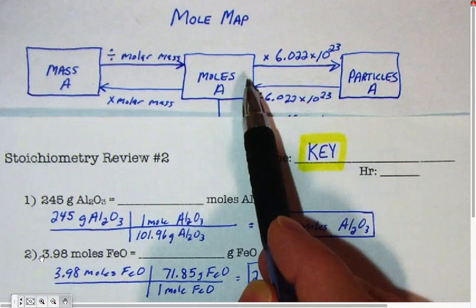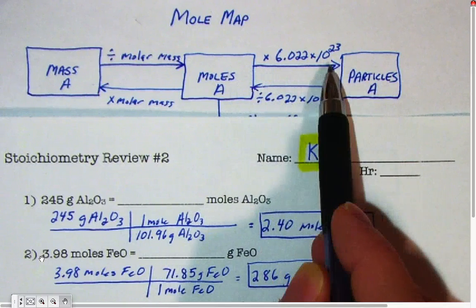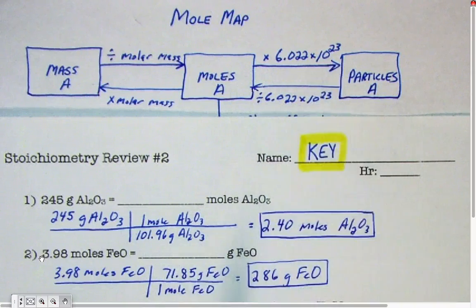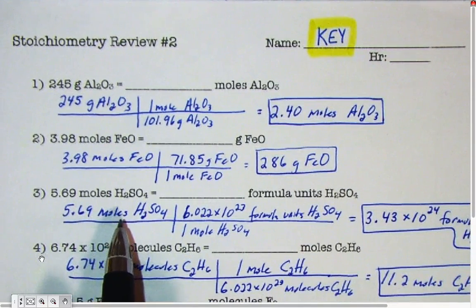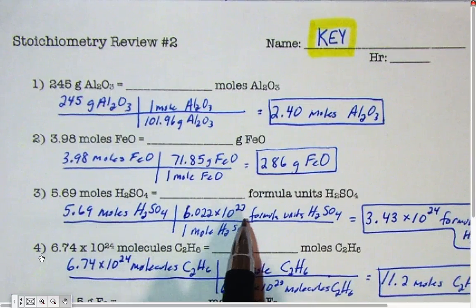This also works for particles. If you want to go from moles to particles, you multiply by Avogadro's number. That's what we did in number 3, multiplied number of moles by Avogadro's number to get particles.